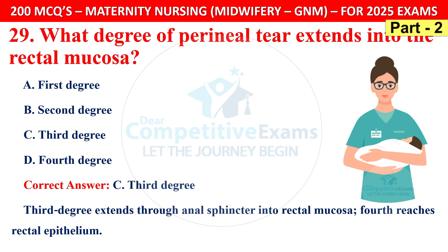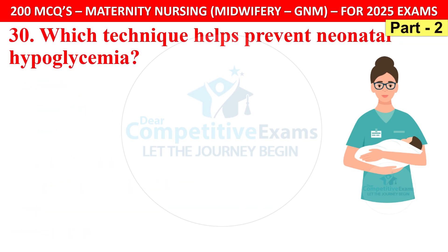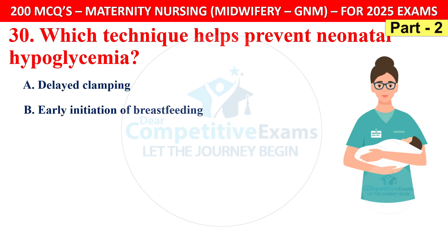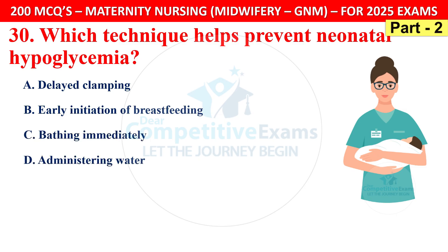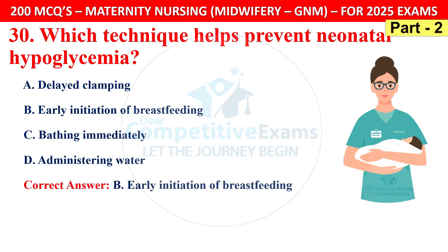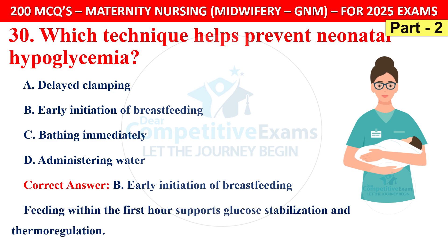Question 30: Which technique helps prevent neonatal hypoglycemia? The correct answer is B — early initiation of breastfeeding. Feeding within the first hour supports glucose stabilization and thermoregulation.